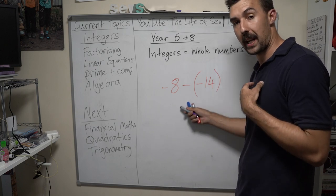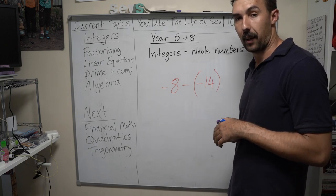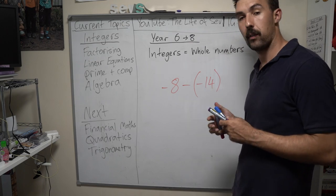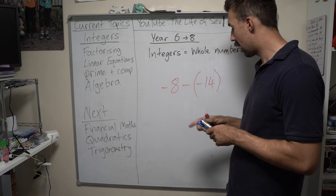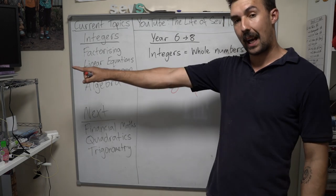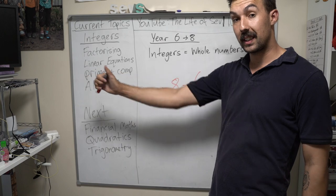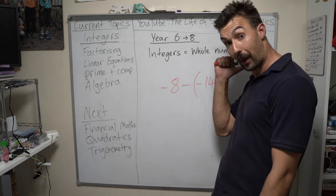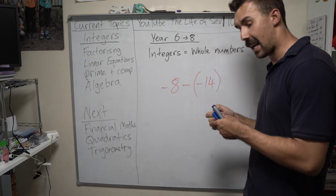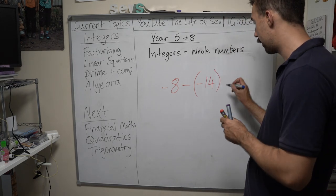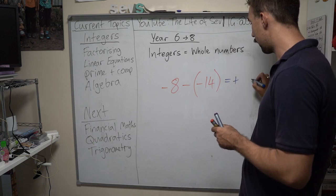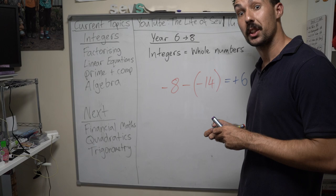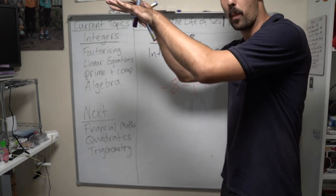8 take away 14 — we're going in the negative direction. But because it's negative 14, we're taking negatives away, so we have to go that way. And yes — we are at positive 6. Positive 6. Do we get off the ground? Yes, we do. 6 meters up.